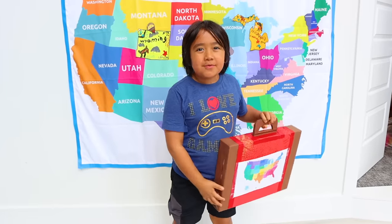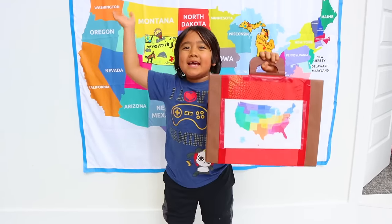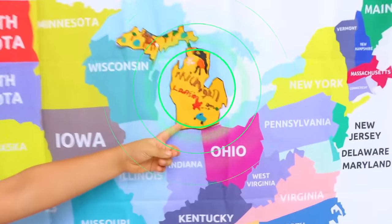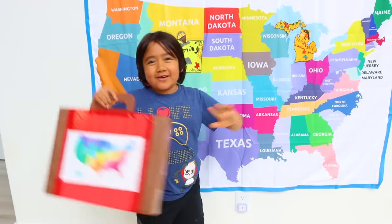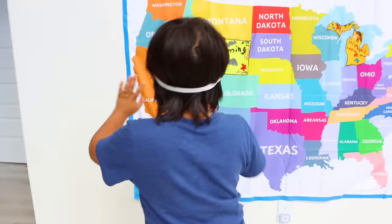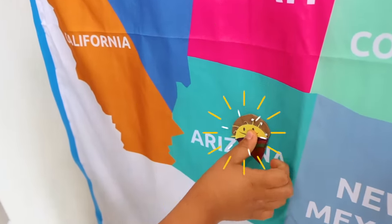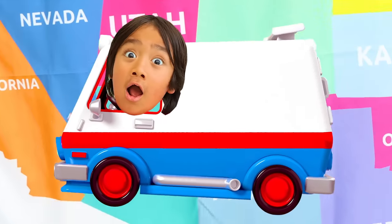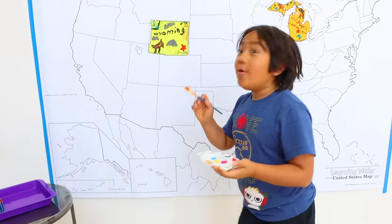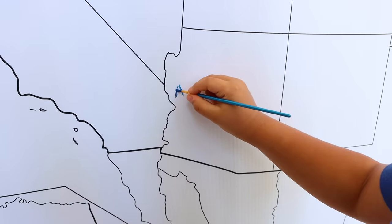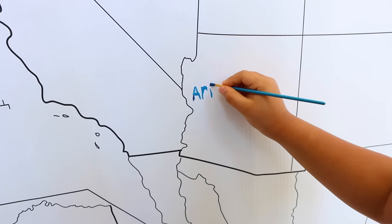Hi guys and welcome to another virtual road trip with Ryan! So far we have covered Wyoming and Michigan. Let's see what we're going to do next with the sun cone. I'm blindfolded. I got Arizona! Let's go. So now we've found a blank map, so this time we can actually draw on it. Arizona.